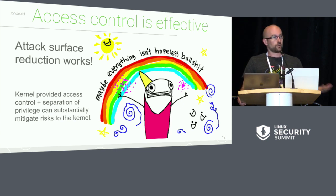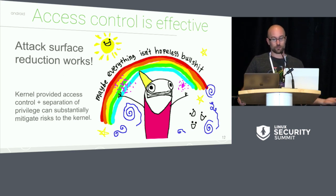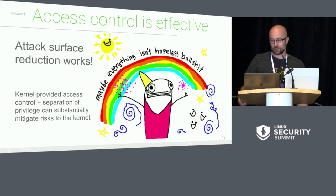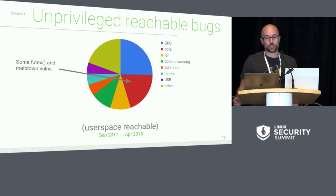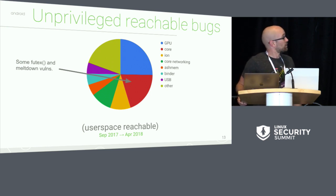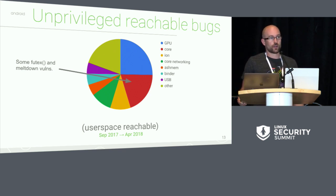It's not like we're done applying attack surface reduction or principle of least privilege from user space to the kernel, so hopefully these numbers will continue to get better with time. Looking at the unprivileged reachable bugs, the biggest problem is the GPU, which is one of the few hardware drivers that are actually accessible to apps on Android.